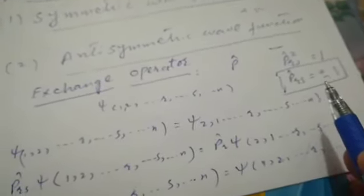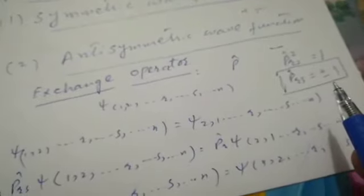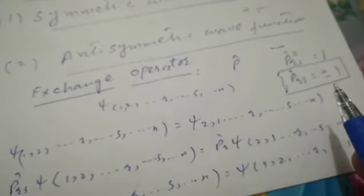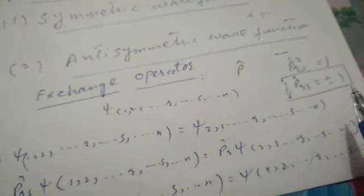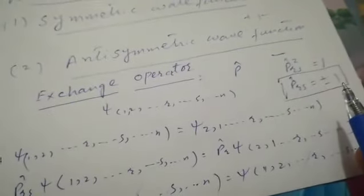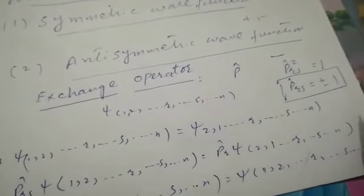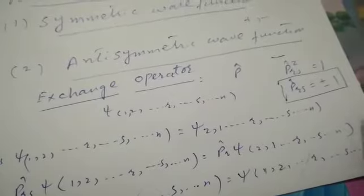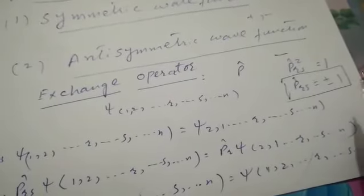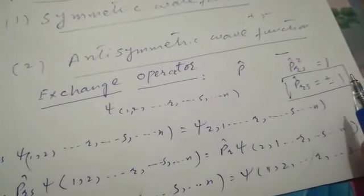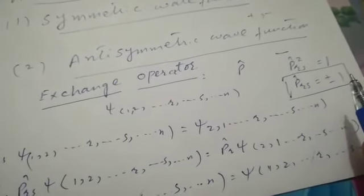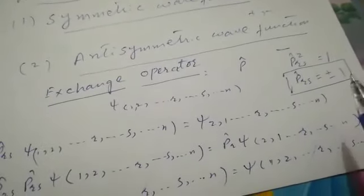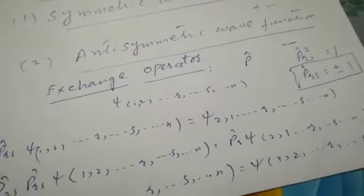This was all about the exchange operator. Next, we will discuss the properties of the exchange operator and explain the meaning of the plus sign and minus sign — why we use plus one and minus one as eigenvalues.